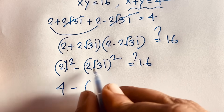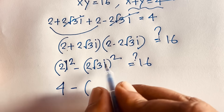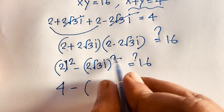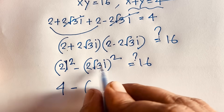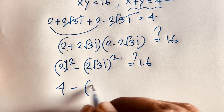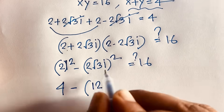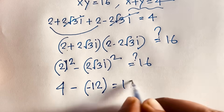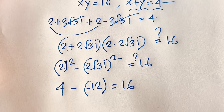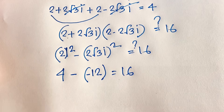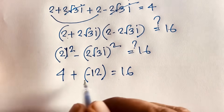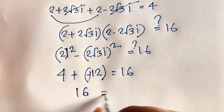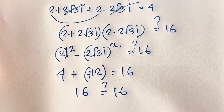This gives 4 minus (4 times 3 times i squared). Since i squared equals negative 1, we get 4 minus negative 12, which is 4 plus 12 equals 16. So xy equals 16 is confirmed.